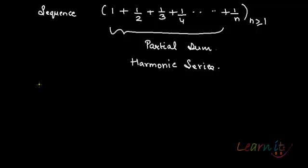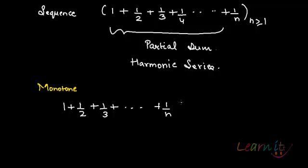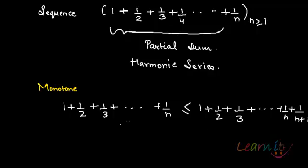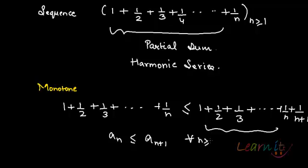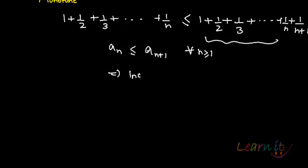First, let us check whether it is monotone — whether it is increasing or decreasing. Let us compare a_n and a_{n+1}. We have a_n as given. This will always be less than or equal to a_{n+1}, because if I add a positive value beyond 1/n, namely 1/(n+1), that term will always be greater. So a_n is always less than or equal to a_{n+1}, which means this is an increasing sequence.